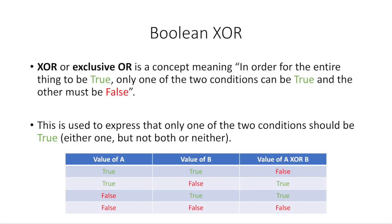Okay, so the next concept is called XOR. XOR means exclusive OR, and you've probably never run into this before unless you've done programming, because it's not a very common thing outside of the world of programming. It's a concept meaning in order for the entire thing to be true, only one of the two conditions can be true and the other one must be false. You're saying I don't want both of them to be true, I don't want both of them to be false — I just want one true, one false, but I don't care which. So if both A and B are true, A XOR B is false. If A is true and B is false, A XOR B is true. If A is false and B is true, A XOR B is true. And if A is false and B is false, A XOR B is false.